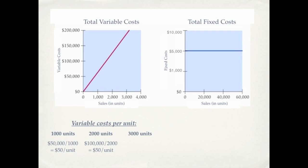Notice the pattern here. What about 3,000 units? What is the variable cost per unit at 3,000 units? It's again $50 per unit. Notice that total variable costs change with activity level, but per unit variable costs stay the same.